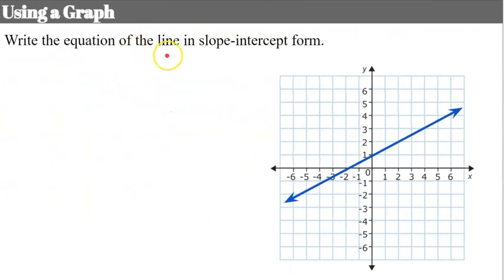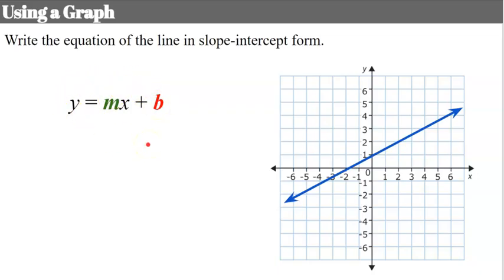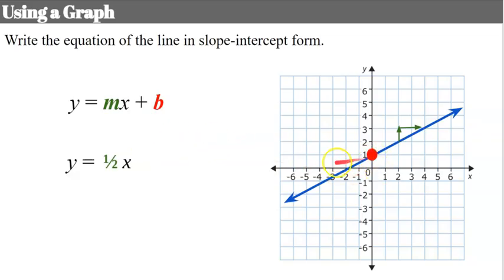We could also write the equation of a line in slope-intercept form using a graph. Here I have a graphed line and I'm going to identify the slope and the y-intercept from this line to write it in slope-intercept form. I'm going to start at a point on the line — you rise 1 and run 2 to get to the next point, so the slope is 1 over 2, or one half. We bring down our x and identify our y-intercept as positive 1. So the equation of this line is y equals one half x plus 1.